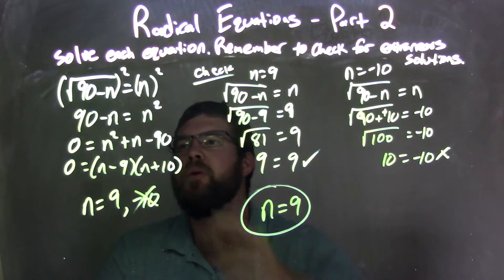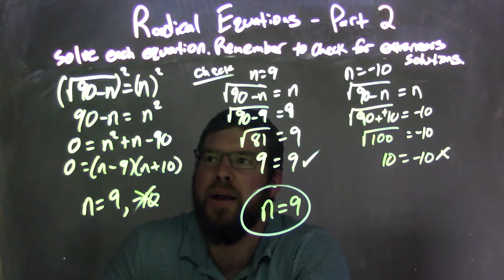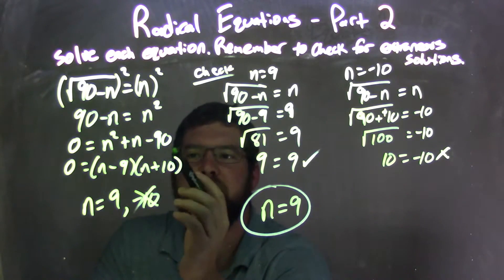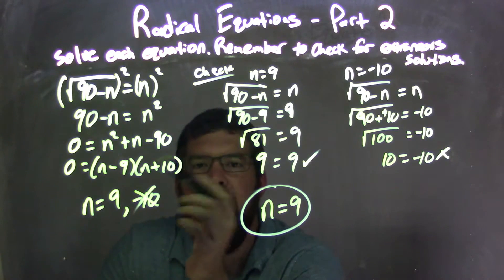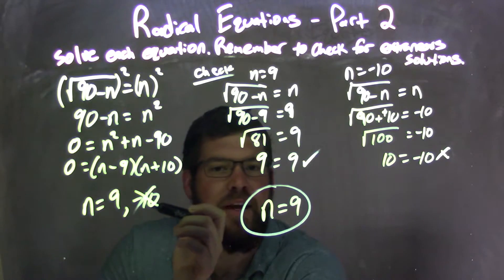So let's recap. We were given square root of 90 minus n, and that equals n. We squared both sides, and then we brought everything over to the right-hand side, leaving us with n squared plus n minus 90. I then factored that, getting n minus 9 times n plus 10. And our two solutions from there, setting both parts equal to 0, was n equals 9 and n equals negative 10.